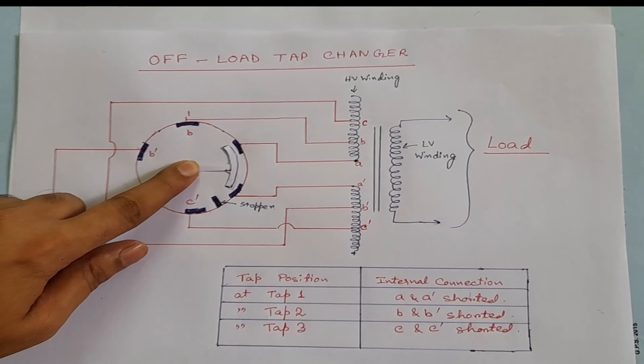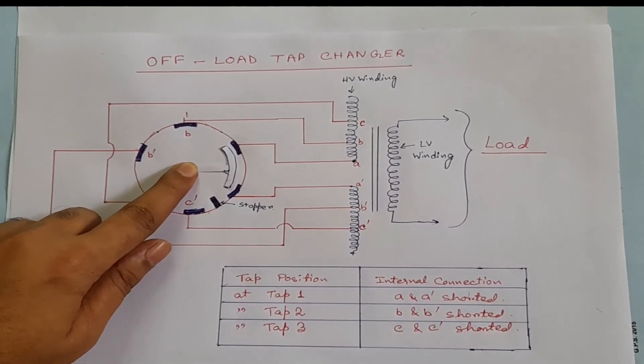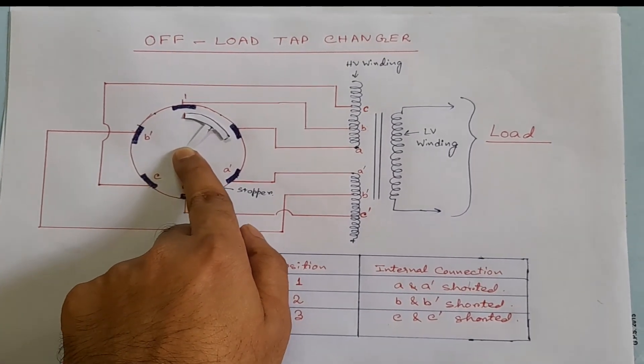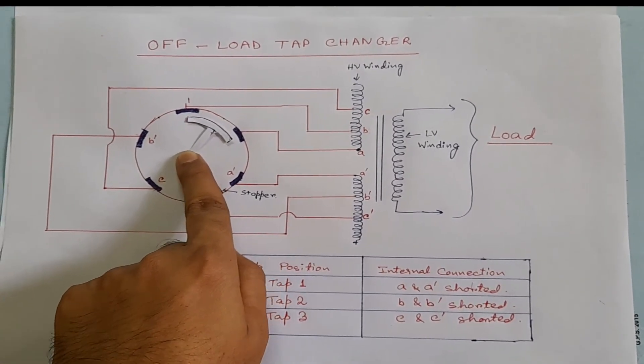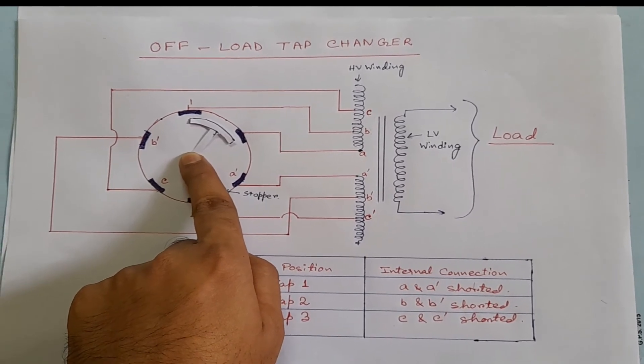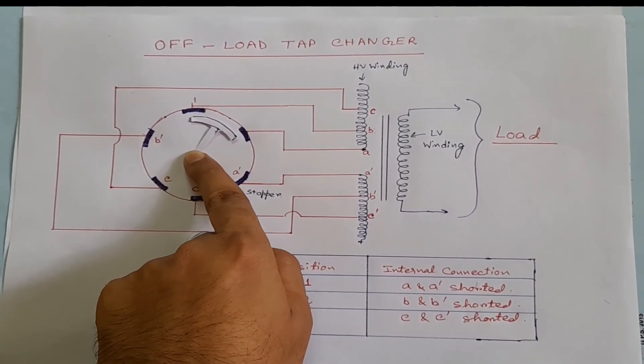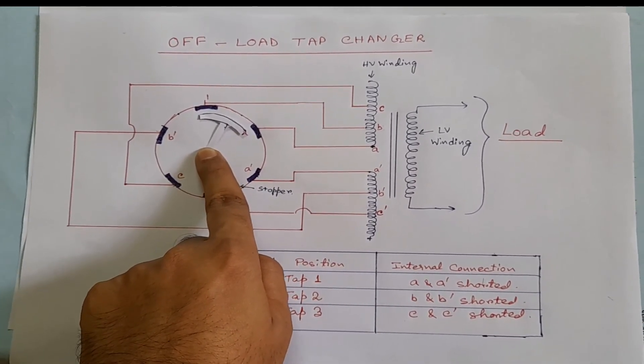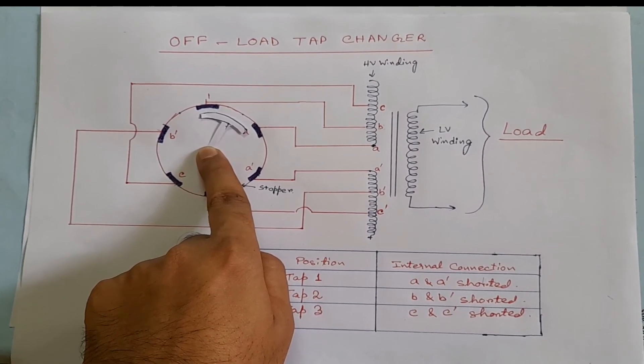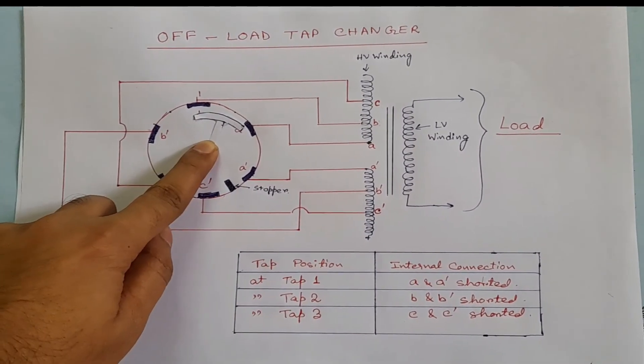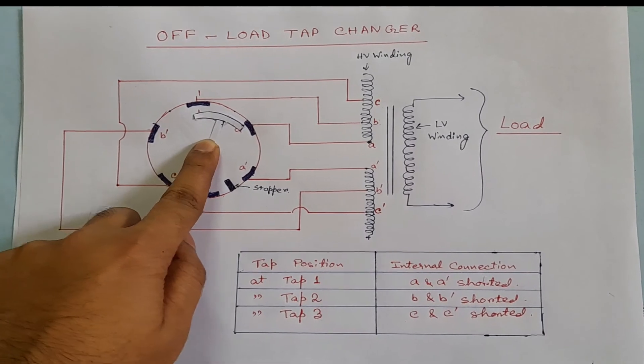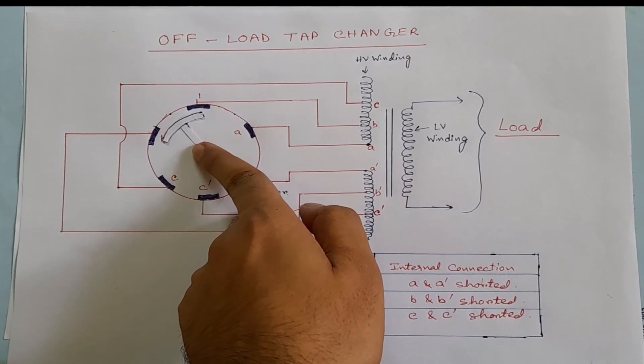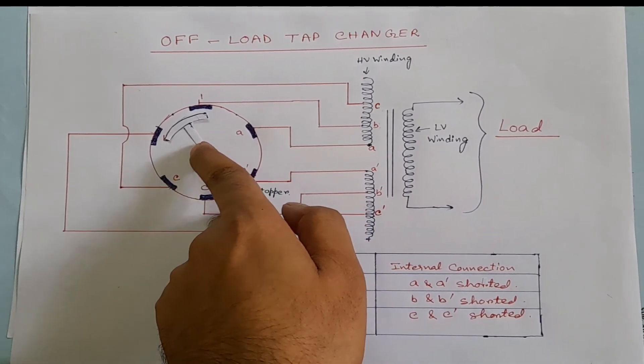Suppose we want to change tap from one to two position. For this, the shaft will start rotating, and at this position, notice that there is no continuity between the upper and lower side of the HV winding. So there will be a momentary disconnection. If this operation is done without switching off the load, then there will be a huge flashover in the off-load tap changer.